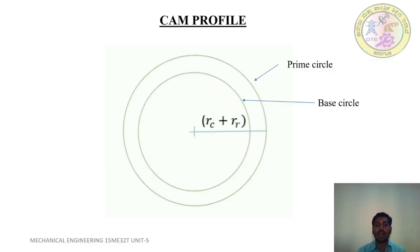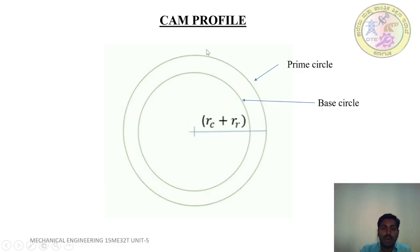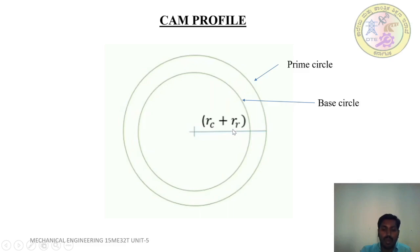In order to draw the CAM profile, take the base circle with CAM radius 25 mm. For a roller follower, we need to draw a prime circle. The prime circle radius RC equals CAM radius plus roller radius: 25 mm plus 7.5 mm equals 32.5 mm.